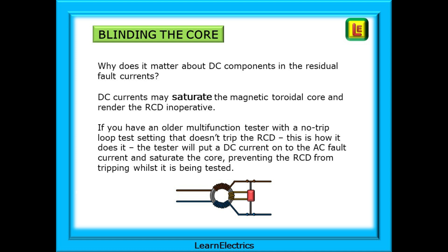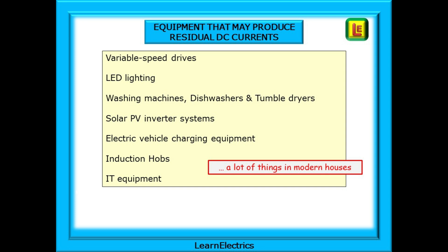If you have an older multifunction tester with a no-trip loop test setting for measuring earth fault loop impedance — one that doesn't trip the RCD — this is how it works: the tester puts a DC current onto the AC fault current and saturates the core, preventing the RCD from tripping whilst it is being tested. It will blind the core during the test. Types of equipment that might produce DC residual currents and potentially blind the core include variable speed drives, LED lighting, washing machines, dishwashers, and tumble dryers.